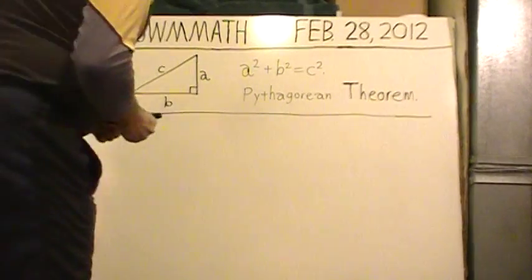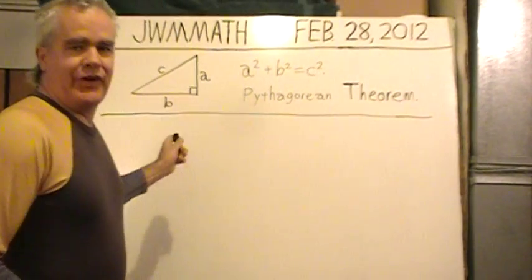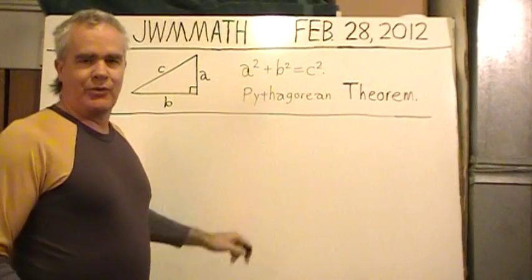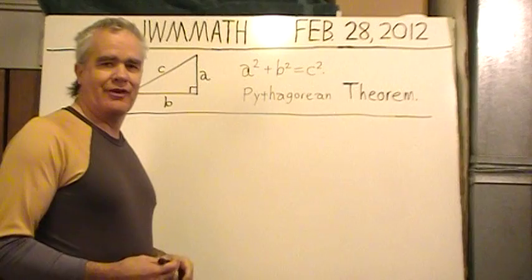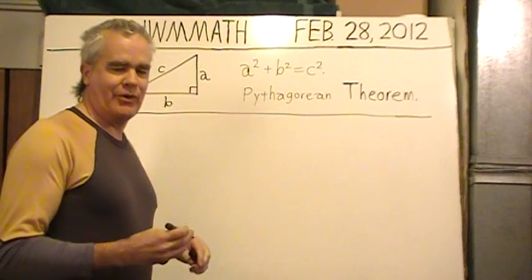But what about instead of the sum of two squares equaling a third square, adding up three squared numbers so that their sum is yet another squared number?